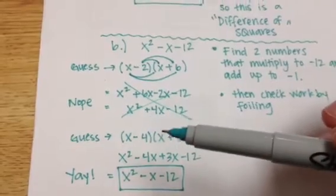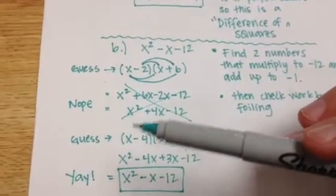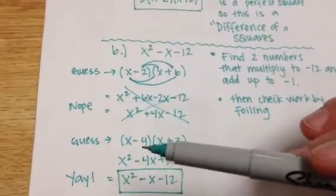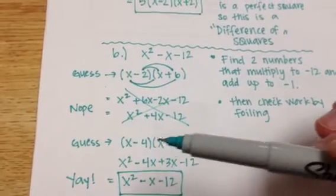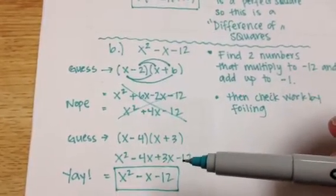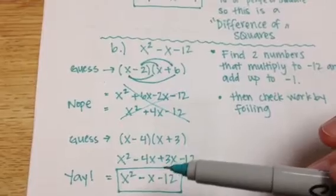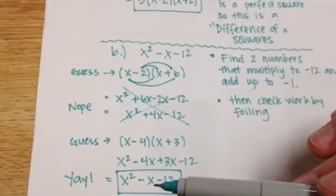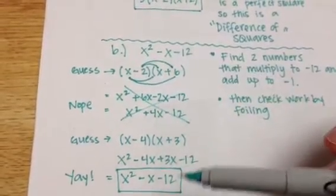And then when I check, x times x is x squared, x times 3 is 3x, I get a negative 4x there, and negative 4 times 3 is negative 12. When I combine like terms in the middle, negative 4 and 3 gives me a negative x, and so I know that this one worked, so I've got it.